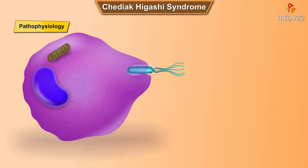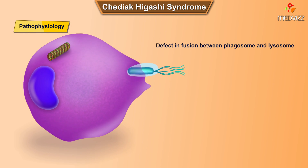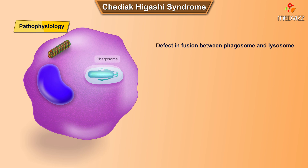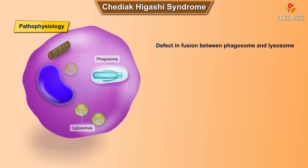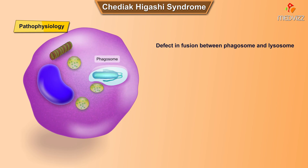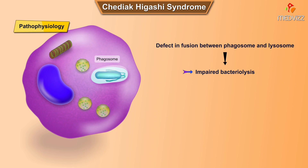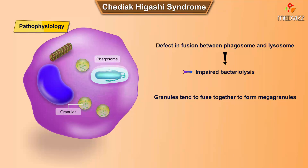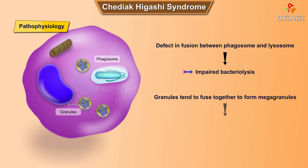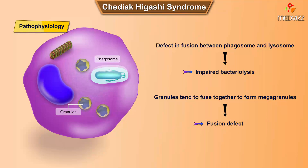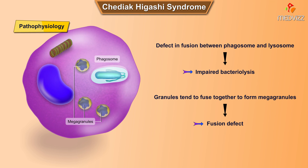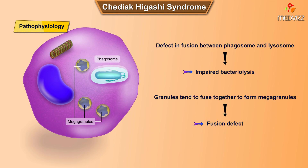Pathophysiology. The defect lies in fusion between the phagosome and lysosome, known as impaired bacterial lysis. Granules in these cells tend to fuse together — known as a fusion defect — to become mega granules that do not function properly.